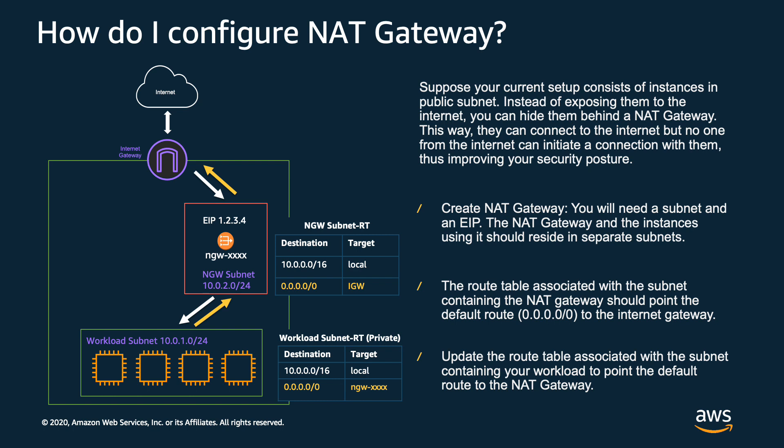If there was going to be an initiation from the internet back to your workloads, the only IP address it would see would be the elastic IP address of the NAT gateway. Because the NAT gateway doesn't have any initiated communications from your instances or workloads to that destination, it would simply drop the packet.